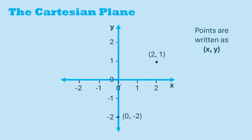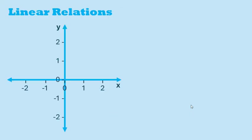(0, -2) represents x is 0 and y is negative 2. The Cartesian plane can be used to plot linear relations. In other words, a straight line.